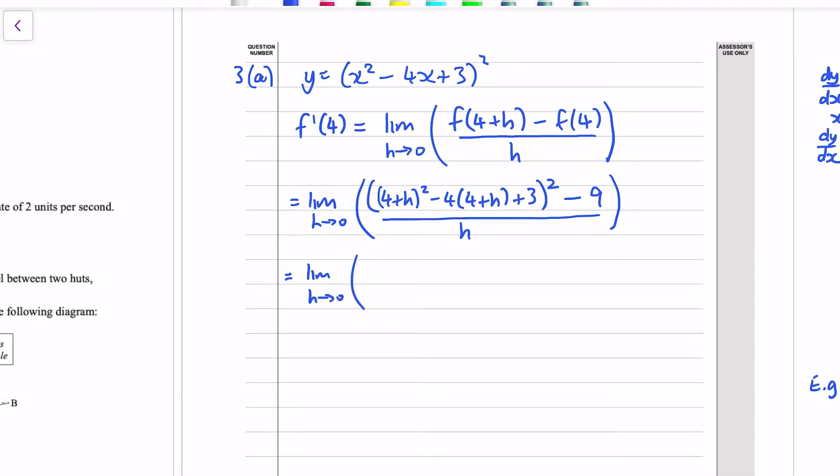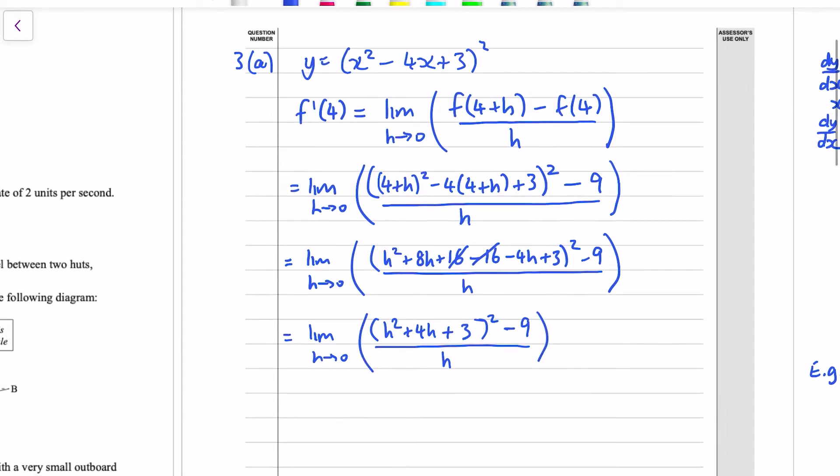So we've got inside those first brackets, 4 plus h squared is h squared plus 8h plus 16. And then we've got minus 16 minus 4h and plus 3. And that's all been squared. So we've got minus 9, all over h.